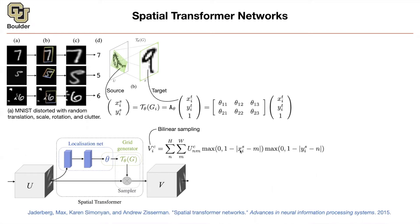If X equals M, that term ends up being one. If Y equals N, that term is equal to one, and you're just copying U at that channel to your current pixel. The maximum terms are most of the time zero, except near the neighborhood of Xi and Yi. So the summation goes away and you're just copying your input to the output. It's like a convolution with a pyramid function — that's your bilinear interpolation element.